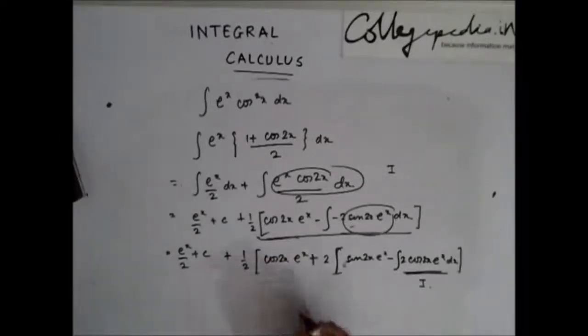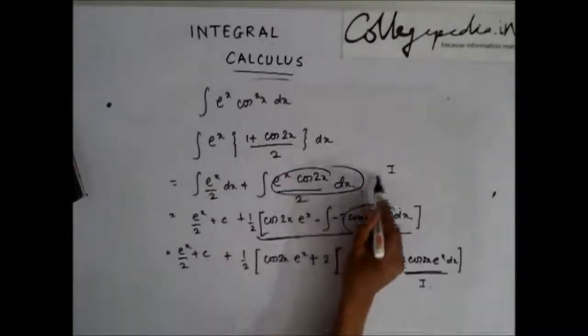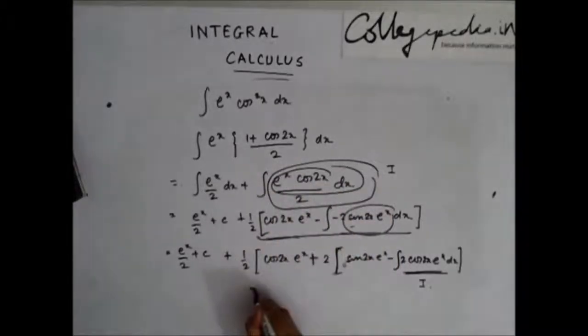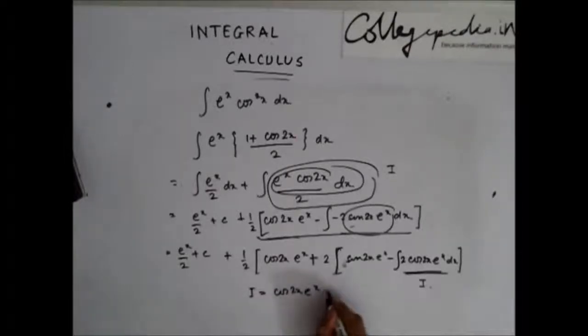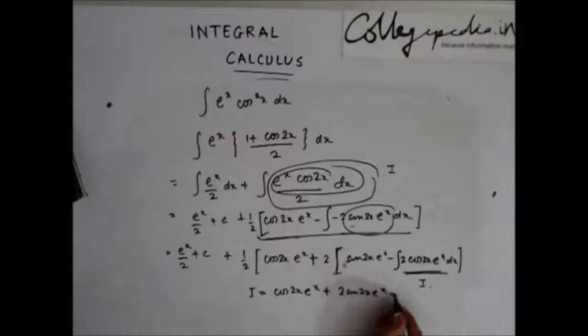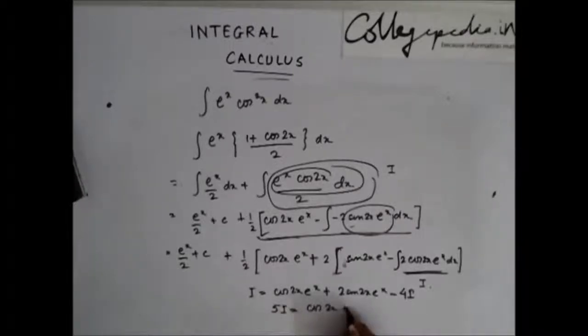So I can write, just have a look at this part. This is i, which is equal to cos 2x e to the power x plus 2 sin 2x e to the power x minus 4i. So 5i becomes cos 2x e to the power x plus 2 sin 2x e to the power x. So my i becomes this.